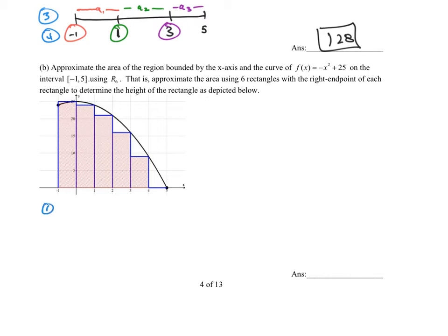Let's go through our steps. First, how many rectangles do they want? Six rectangles. Second, what's the width of each rectangle? The width is delta x — that's the right endpoint, which is 5, minus the left endpoint, which is negative 1, divided by the number of rectangles, which is 6. That's 6 over 6, so the width of each rectangle is 1.